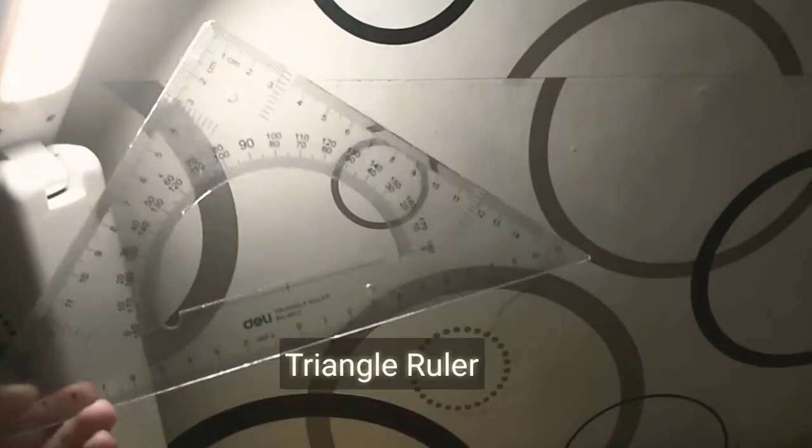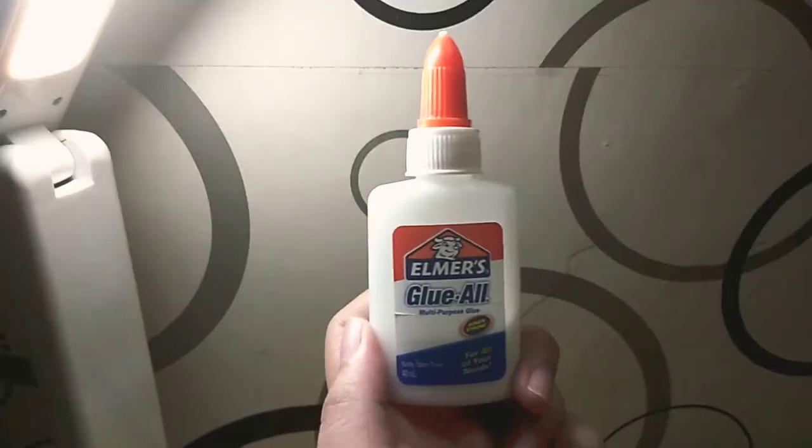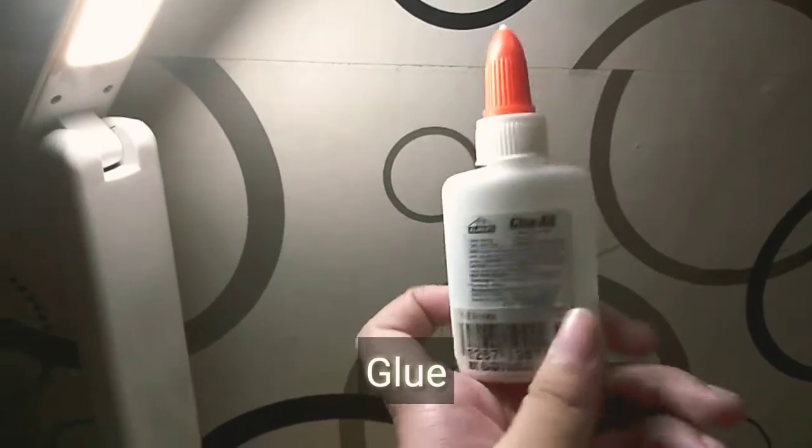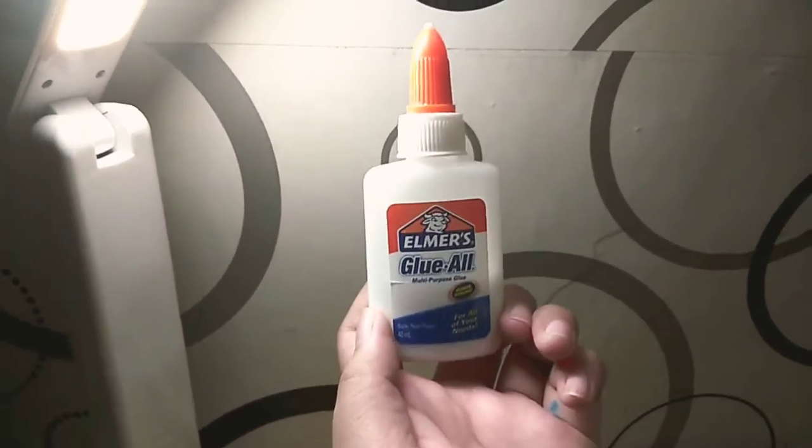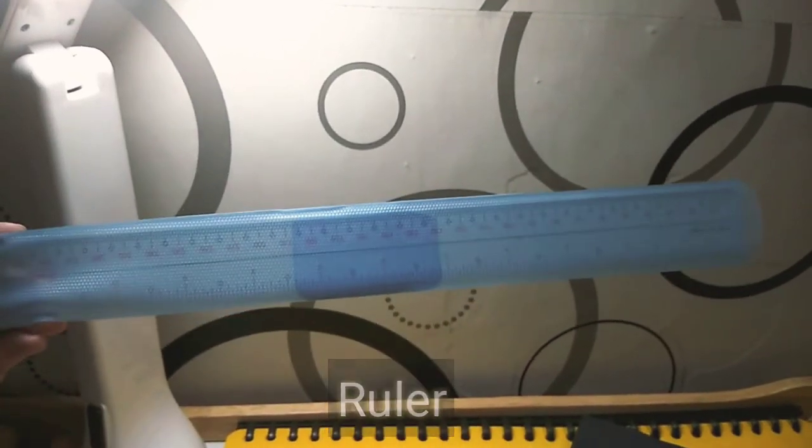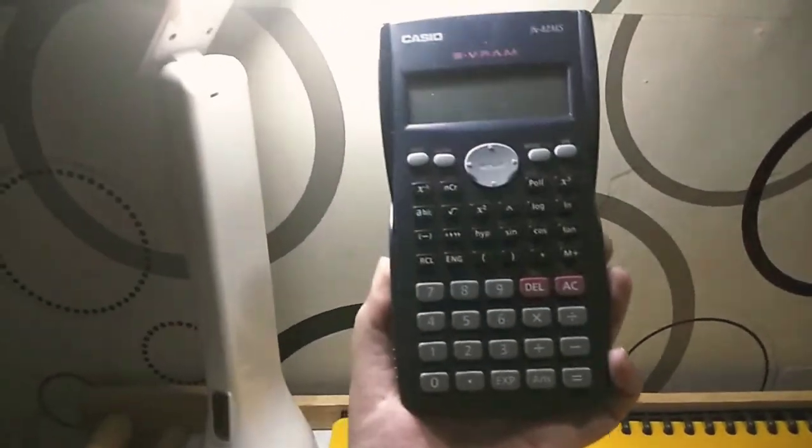Next is this triangular ruler. Next is this Elmer's glue, then my ruler. And of course my calculator for math subjects like calculus.